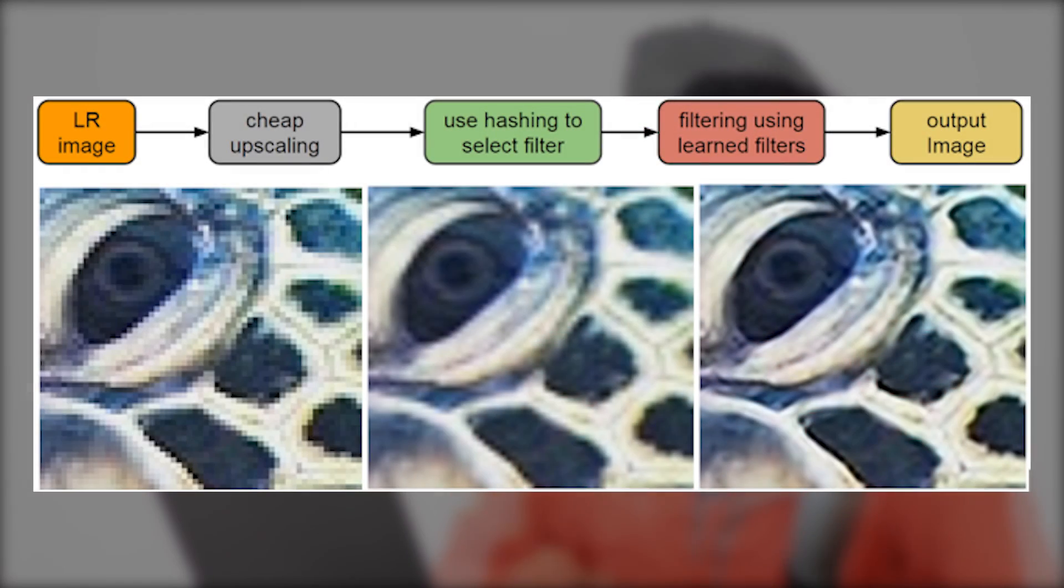So basically what it does is take the low resolution image, use a cheap upsampler to upscale the image, and then use machine learning to analyze both and create a high resolution image. In this example, as you can see,